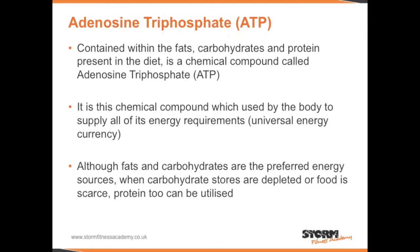Adenosine triphosphate. Contained within the fats, carbohydrates and protein present in the diet is a chemical compound called adenosine triphosphate, also known as ATP. It is this chemical compound which is used by the body to supply all of its energy requirements, also known as the universal energy currency. Although fats and carbohydrates are the preferred energy sources, when carbohydrate stores are depleted or food is scarce, protein too can be utilised.